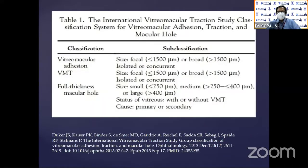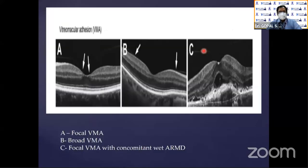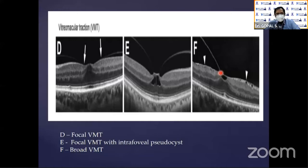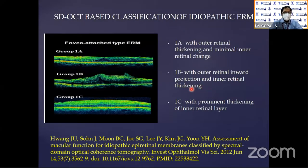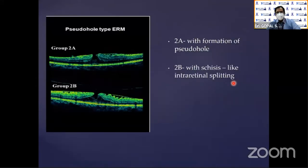Now let us look at specific OCT findings. Vitreo-macular adhesions can be focal or broad VMAs, or focal VMA with elevation depth. In vitreo-macular traction, you can see focal traction, focal vitreo-macular traction with a pseudocyst inside the inner retina, and broad traction. Idiopathic epiretinal membrane is divided into 1A — with outer retinal thickening and minimal inner retinal change — 1B with outer retinal inward projection and inner retinal thickening, and 1C with prominent thickening of the inner retinal layer.